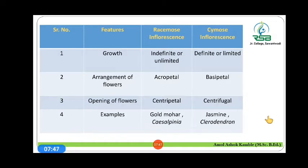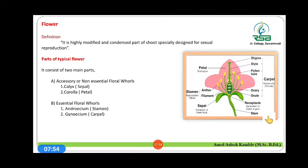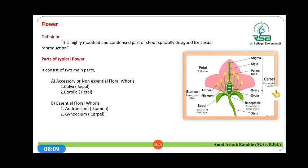Let us discuss one of the most important parts of the flowering plant, that is the reproductive part of the plant, which is called the flower. The flower is a highly modified and condensed part of the shoot which is specially designed for sexual reproduction.